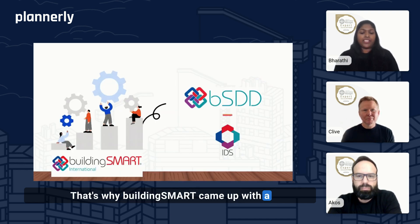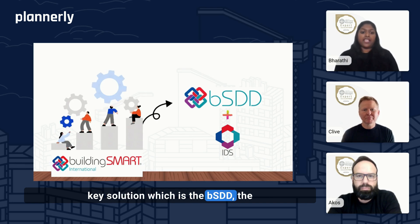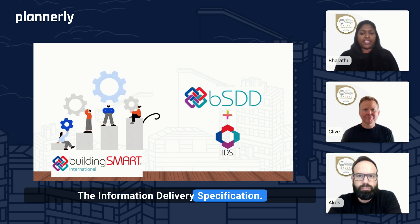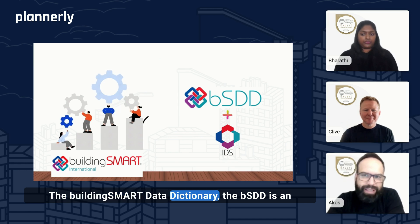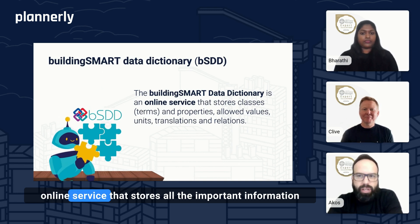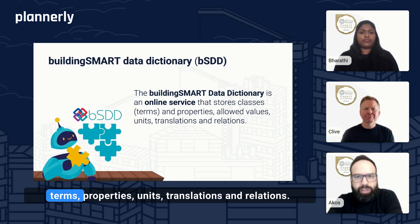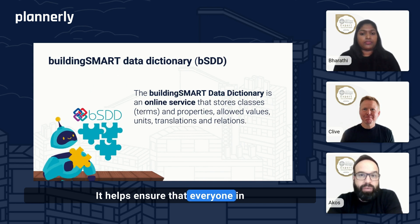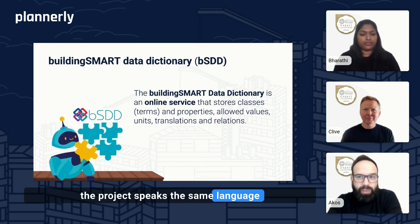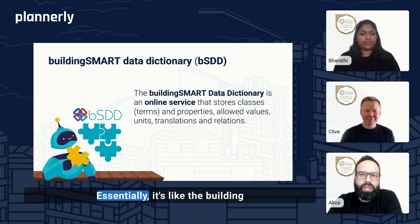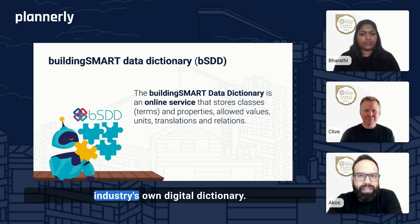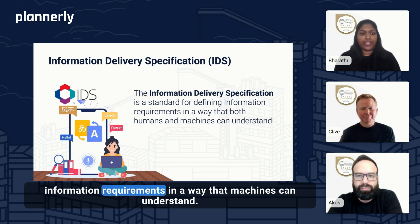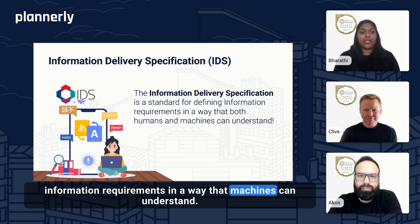That's why Building Smart came up with the key solutions: the BSDD, the Building Smart Data Dictionary, and the IDS, the Information Delivery Specification. The Building Smart Data Dictionary is an online service that stores all the important information — terms, properties, units, translations, and relations. It helps ensure that everyone in the project speaks the same language and uses consistent standardized definitions. Essentially, it's like the building industry's own digital dictionary. And then the IDS is a standard for defining information requirements in a way that machines can understand.